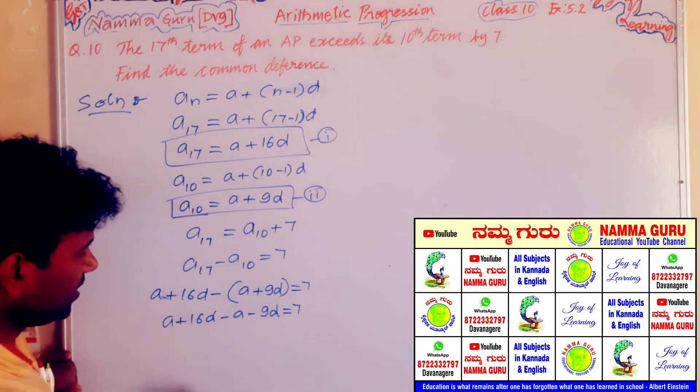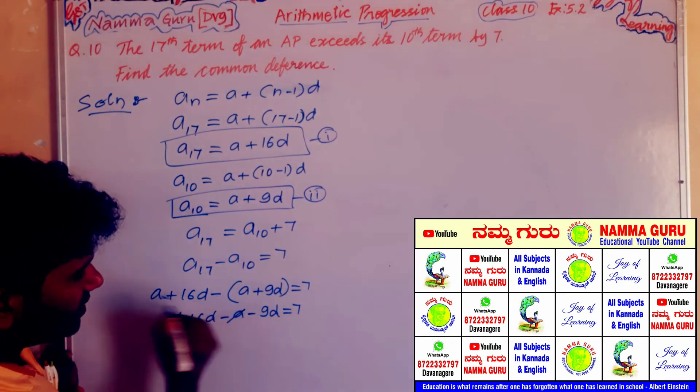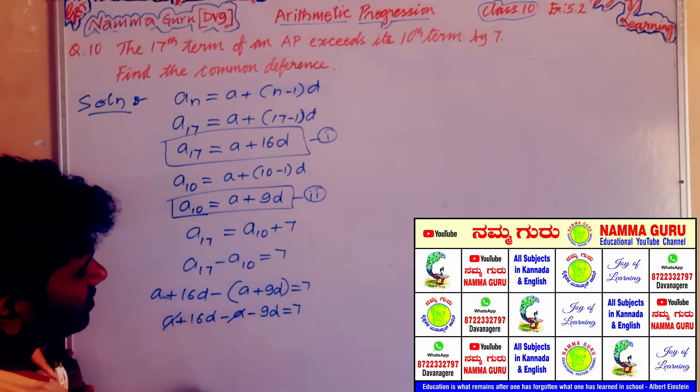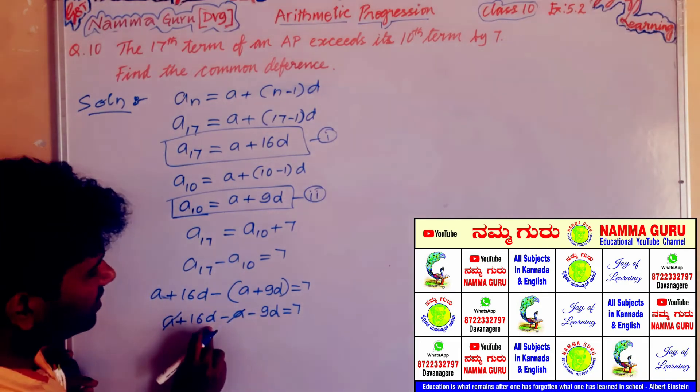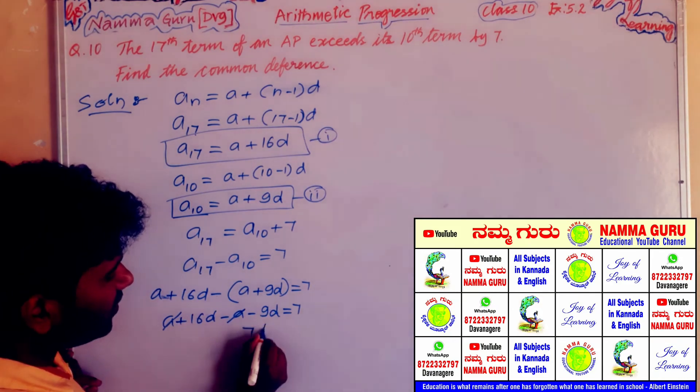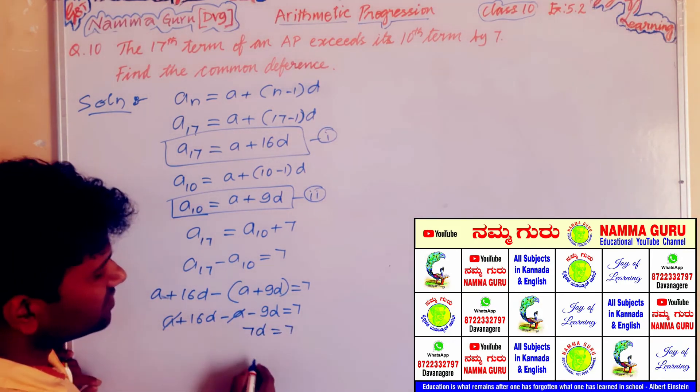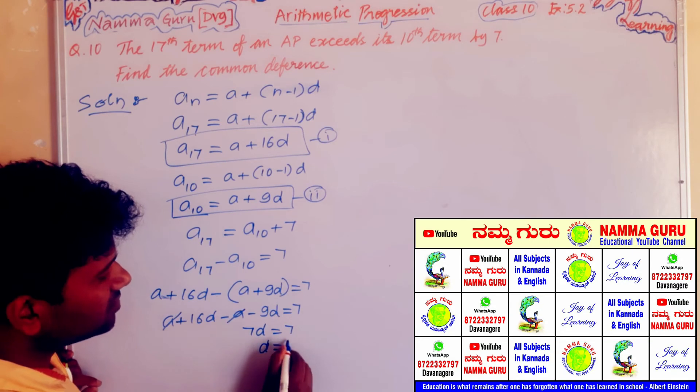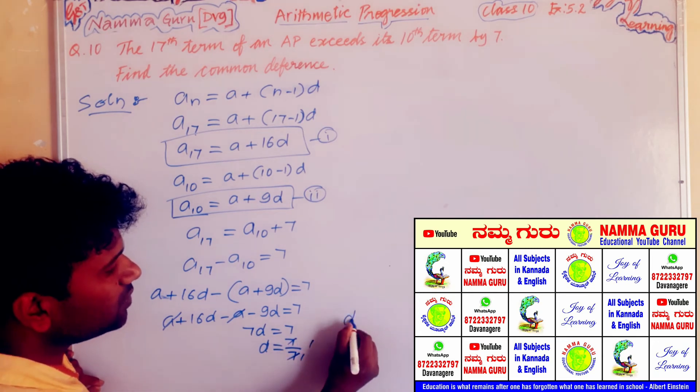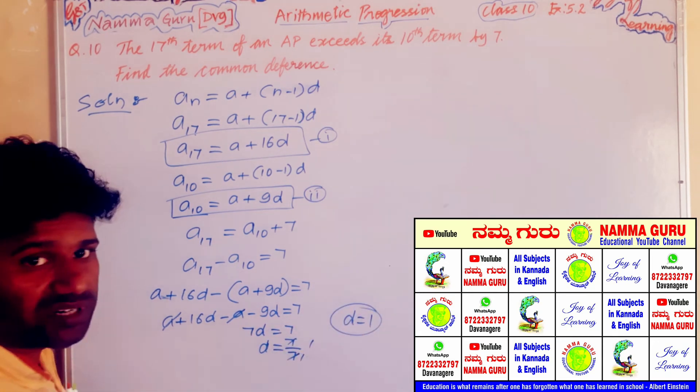7d is equal to 7. Transpose, divide by 7, d is equal to 1. What is the common difference?